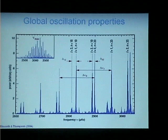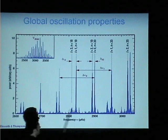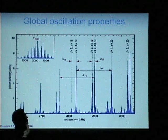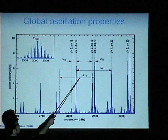In the Sun, the frequency of maximum power corresponds to five minutes. If you zoom in on a portion of that power spectrum, what you see is a very regular, comb-like structure. Consecutive radial overtones are interleaved with different spherical degrees. We can define two global oscillation properties from this spectrum. The first is the large frequency separation — the spacing in frequency between modes with consecutive radial overtones but the same spherical degree. For delta-nu zero, that spherical degree is zero, meaning those are radial modes, but you can do the same for dipole modes and higher.